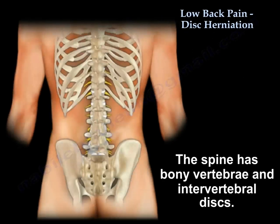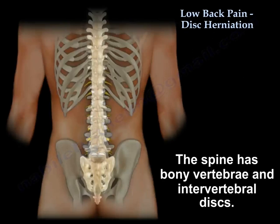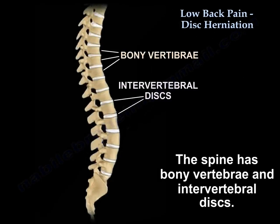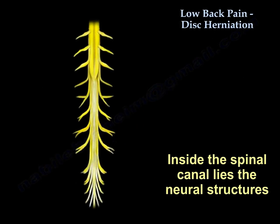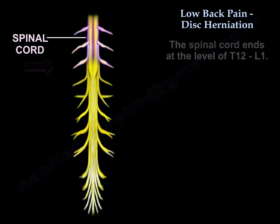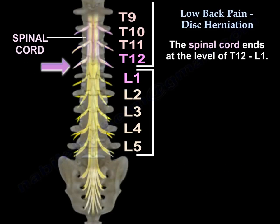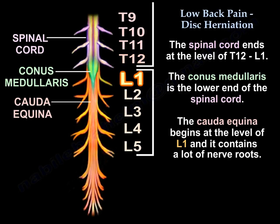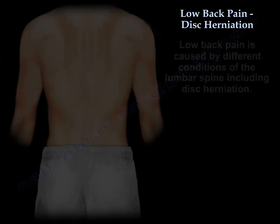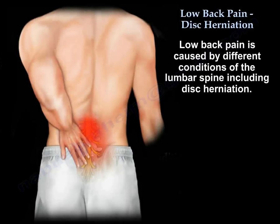Low back pain and disc herniation. The spine has bony vertebrae and discs. Inside the spinal canal lies the neural structures — you find the spinal cord, which ends at the level of T12-L1, the conus medullaris. It is the lower end of the spinal cord. The cauda equina begins at the level of L1 and contains a lot of nerve roots. Low back pain is caused by different conditions of the lumbar spine, including disc herniation.